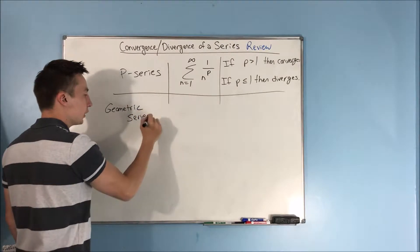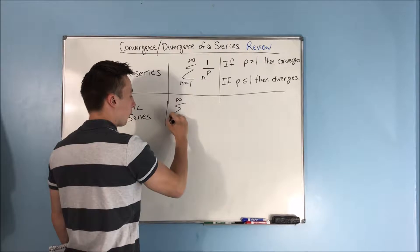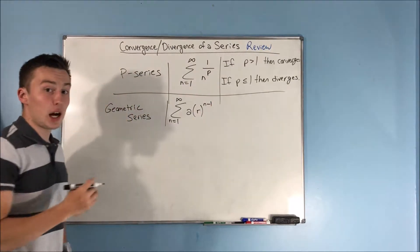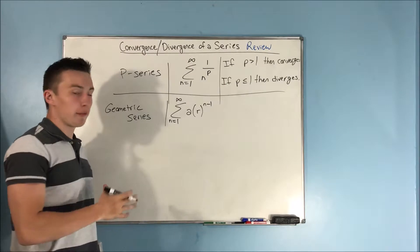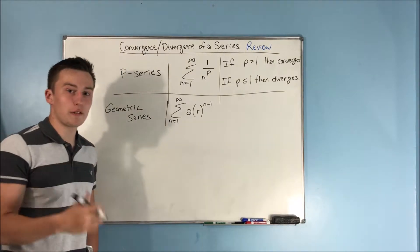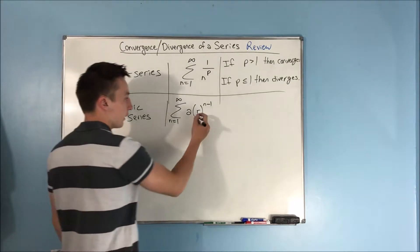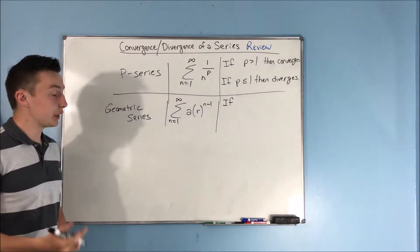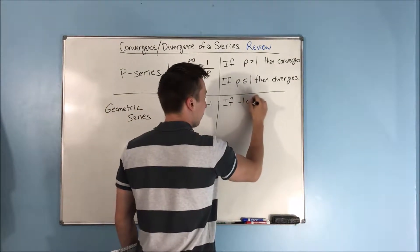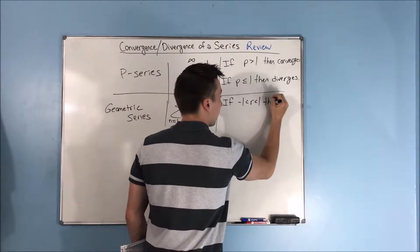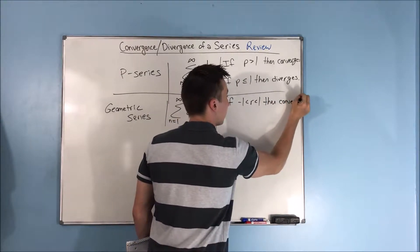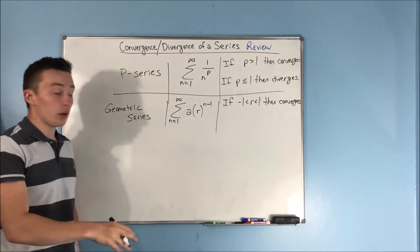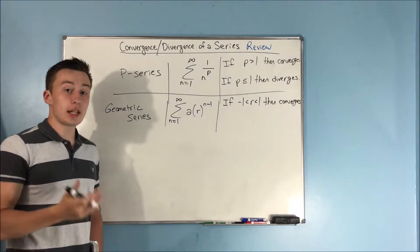For a geometric series, that has the form: the sum from n equals 1 to infinity of a times r to the n minus 1. Of course, r is that common ratio that you've talked about before when dealing with series that weren't infinite back in high school. This r is going to tell us if this series converges or diverges. If r is in between negative 1 and 1, then we know that it converges. Whereas if it's something else, then we know it diverges. Now that we've got that set, we can actually dive into our tests.